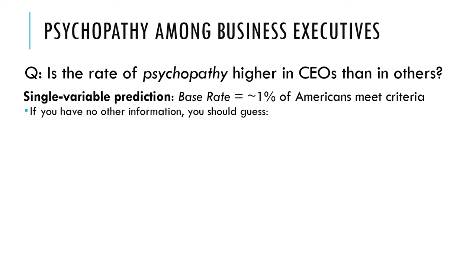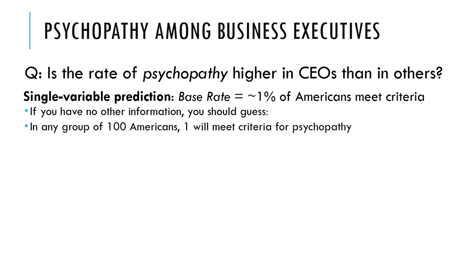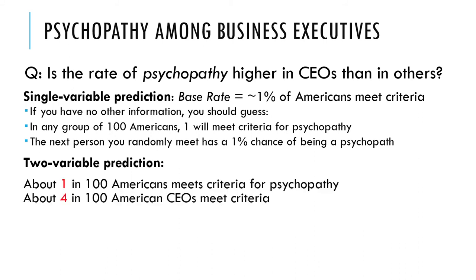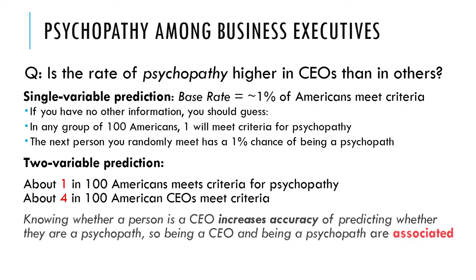If you have no other information, you should guess that in any group of 100 Americans, one will be a psychopath. But if you add in another variable that's associated with that, you can have different predictions. About 1 in 100 Americans in general meets the criteria for psychopathy, but about 4 in 100 American CEOs is estimated by Robert Hare and colleagues to meet the criteria for psychopathy. That's 4 times as high — still a small number, but 4% is a big deal, especially when you're talking about a psychopath running your company.